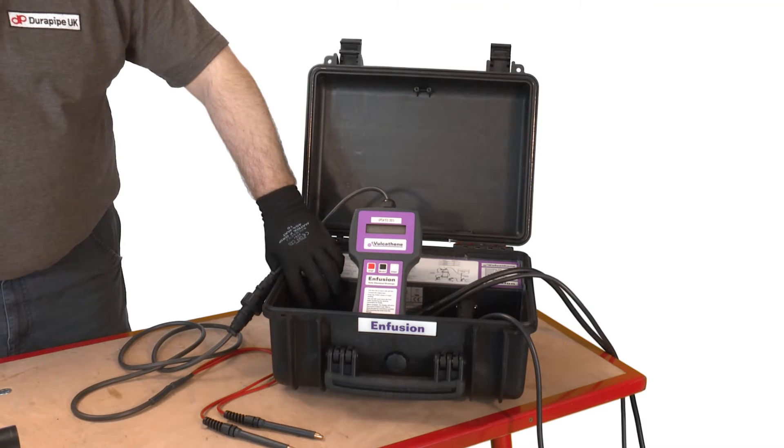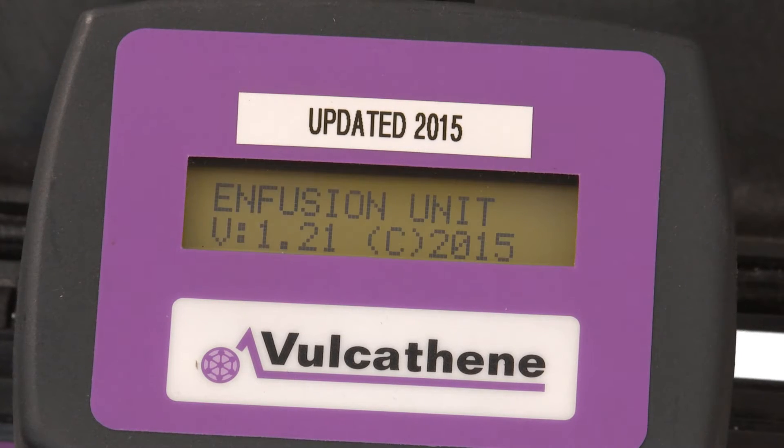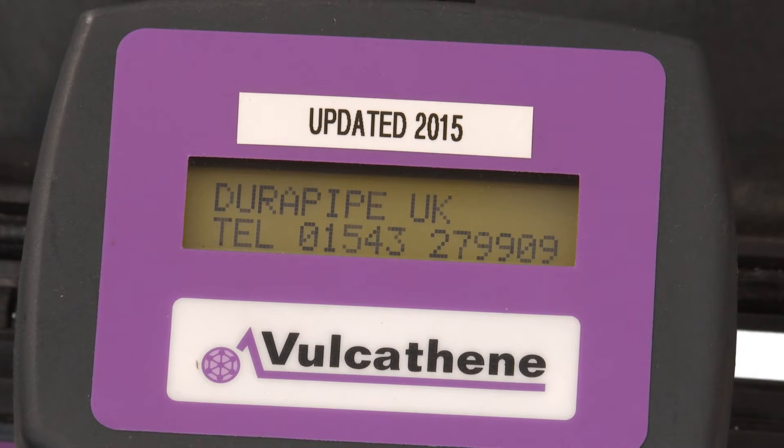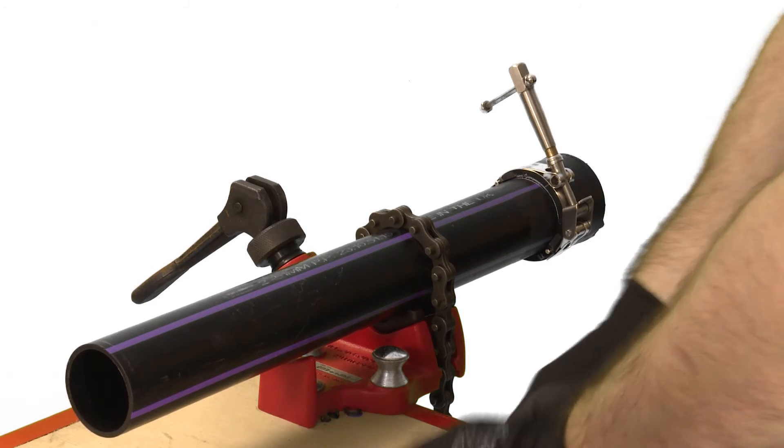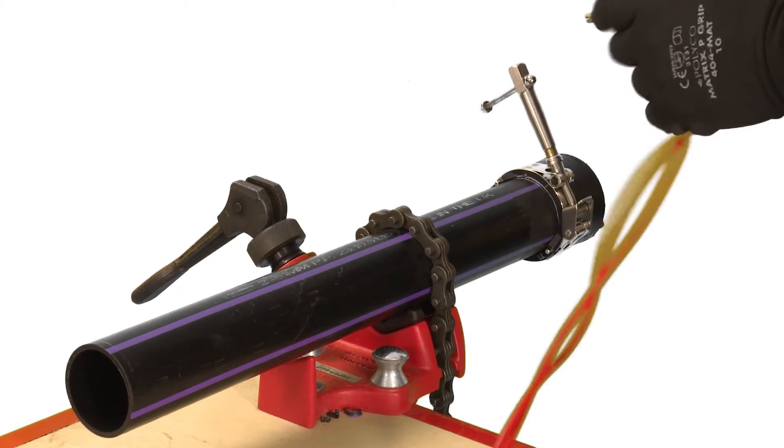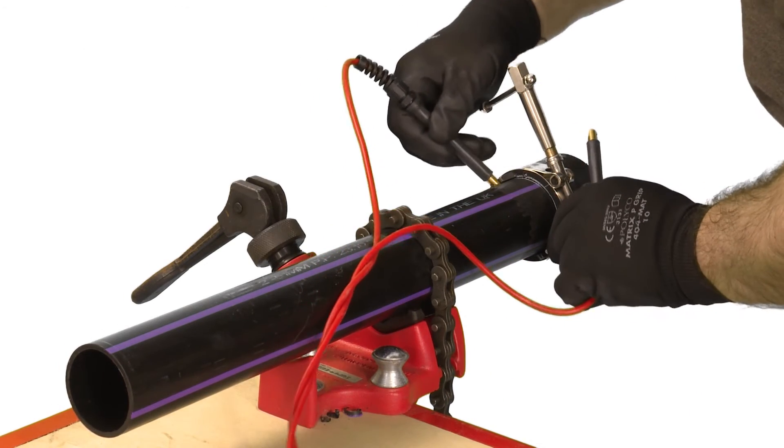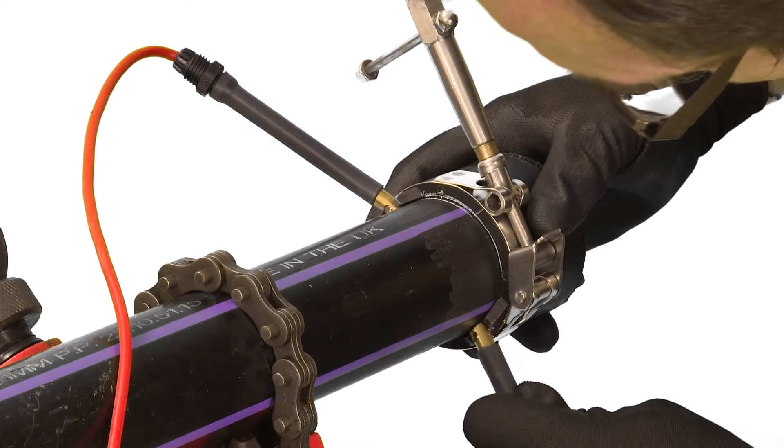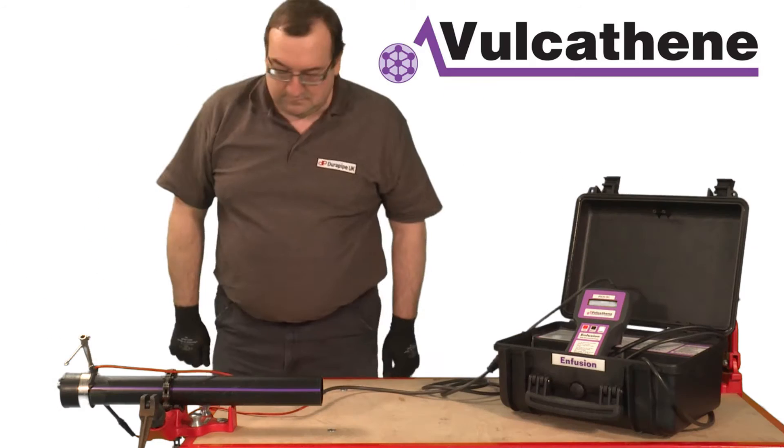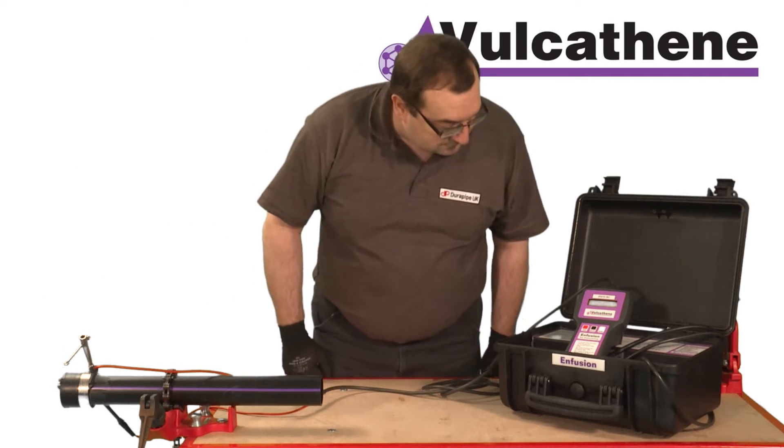Turn the infusion control unit on and it will follow a self-test procedure. Follow the instructions on the display to connect output leads by connecting both output leads to the fitting.